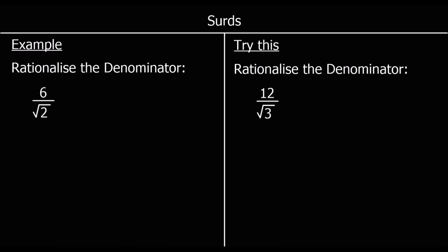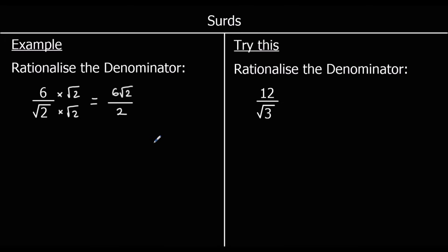So with 6 over root 2, I can multiply top and bottom by root 2, because root 2 times root 2 gives a rational number — which will be 2. So 6 times root 2 is 6 root 2, and root 2 times root 2 is 2. So we have rationalised the denominator. But I can simplify this further: 6 root 2 divided by 2 gives 3 root 2. So that's the simplified answer.